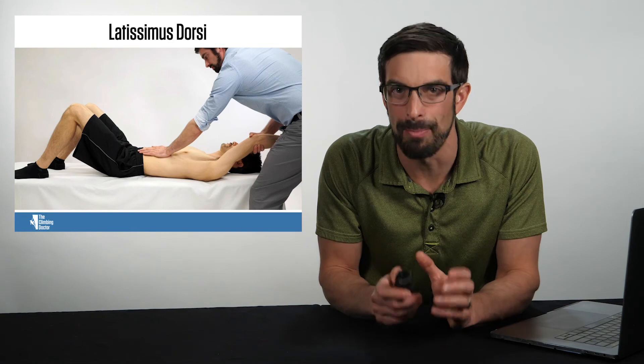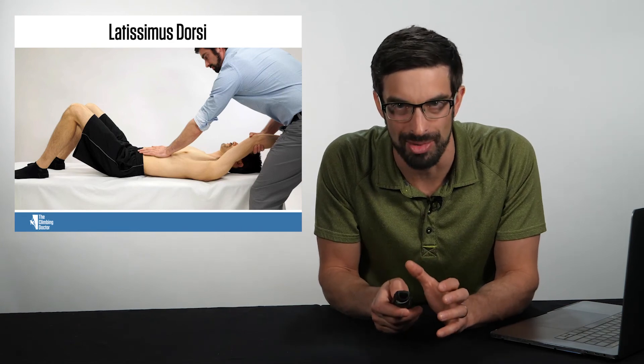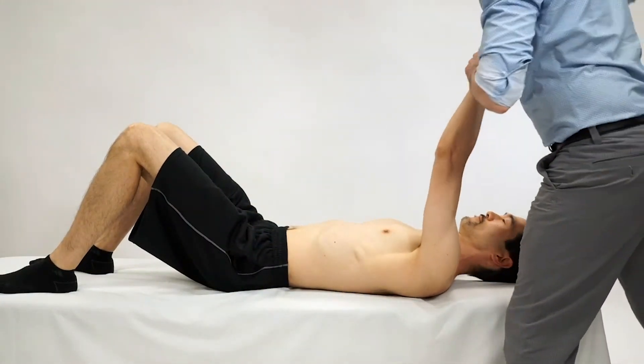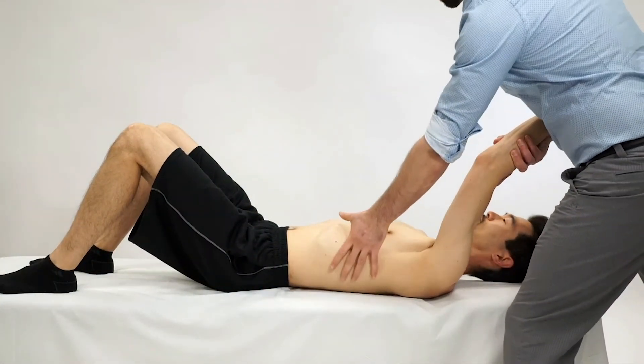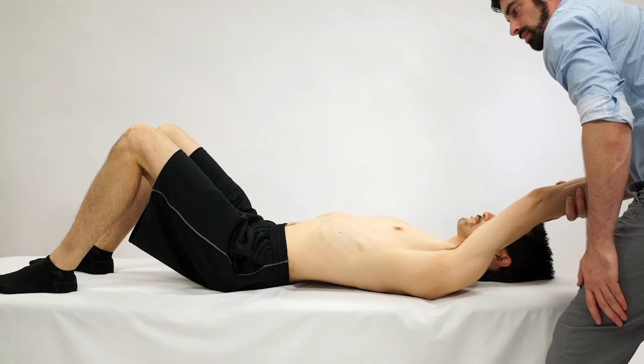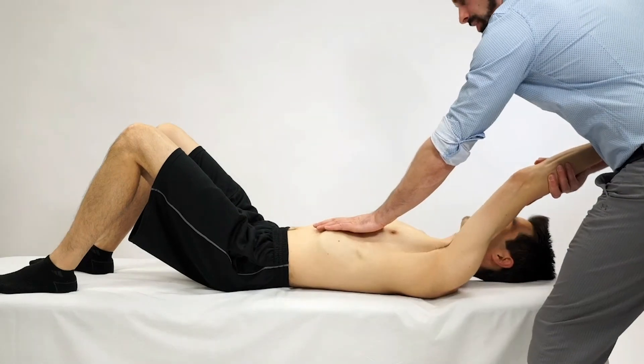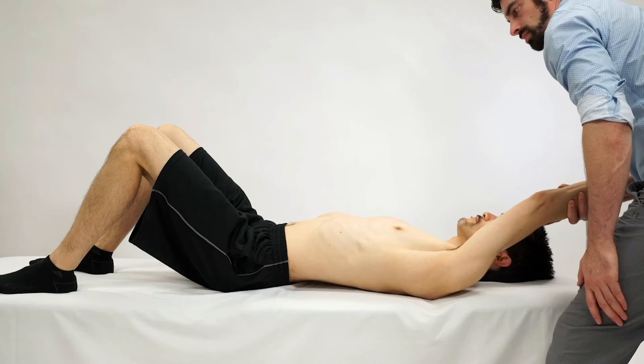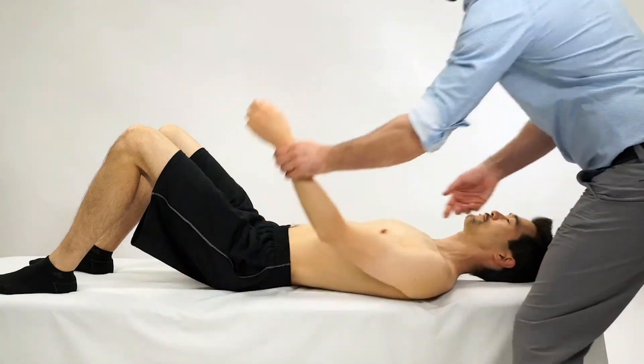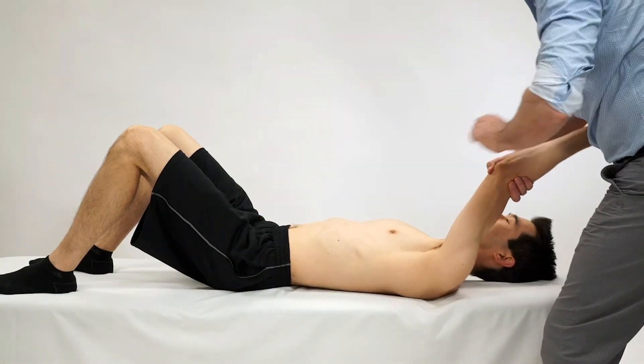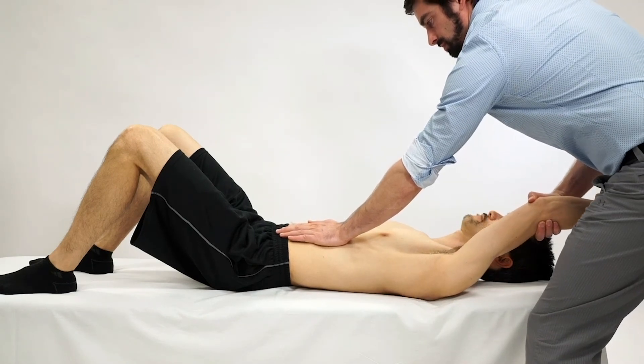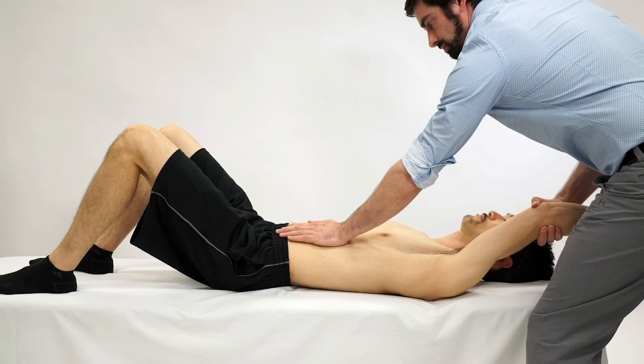The latissimus dorsi is a muscle that needs to be screened in rock climbers. In order to assess the muscle length of the latissimus dorsi, the clinician will grasp the distal humerus of the rock climber and they will monitor the rib and the lumbar position into end range humeral flexion. As you can see here, as the climber is taken into end range humeral flexion, the rib cage lifts and the spine arches. We can then assess the relative flexibility of the muscle by stabilizing the thorax and the rib cage and taking the climber into end range. Here you can see that they no longer can achieve their full mobility.